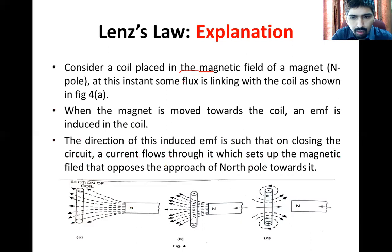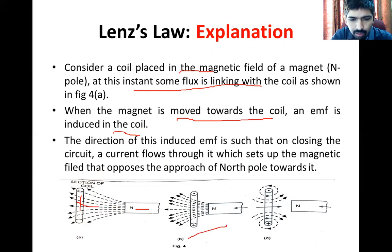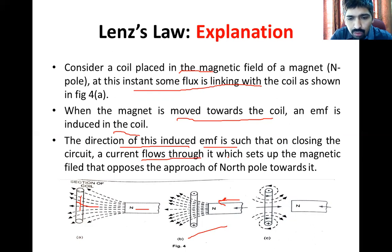Consider a coil placed in the magnetic field of a magnet. Some flux is linking with the coil but it is not moving yet. When the magnet is moved towards the coil, an EMF is induced in the coil. The direction of this induced EMF is such that, on closing the circuit, current flows through it which sets up a magnetic field that opposes the approach of the north pole towards the coil.